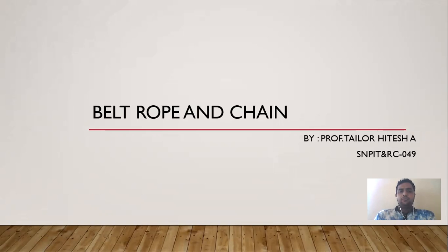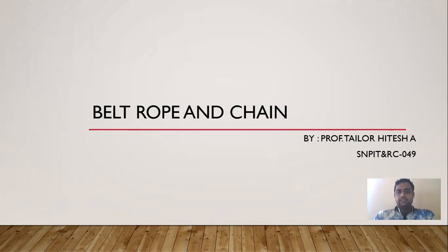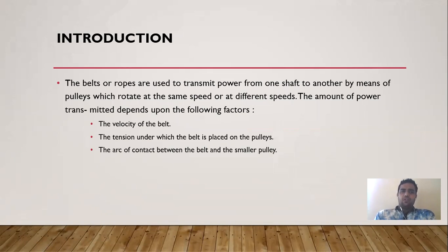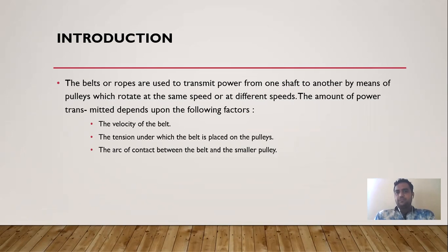Today we will discuss belt, rope, and chain drives. A belt, rope, or chain is used to transmit power from one shaft to another by means of a pulley, which may rotate at the same speed or different speeds. We use belts and ropes whenever we transmit power from one pulley to another pulley.